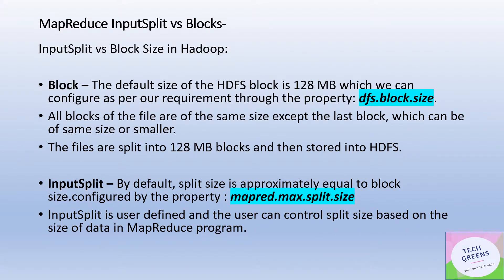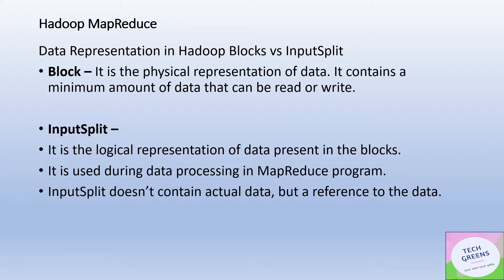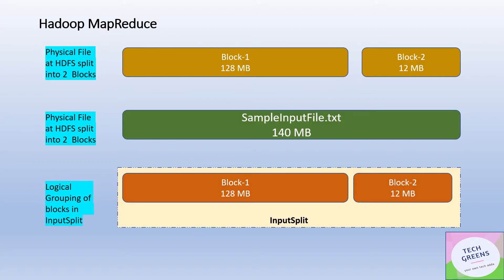By default, the size of HDFS blocks is 128 MB, configured through a property called dfs.block.size, which can be changed. In Hadoop 2, all blocks for an individual file are of the same size except for the last block. For input splits, the size is configured by the property called mapred.max.split.size, which is the maximum size of a split. Input split size can also adjust during the MapReduce run. To reiterate: a block is a physical representation of data — the minimum amount of data that can be read or written — while an input split is a logical representation used during data processing and does not contain the actual data.